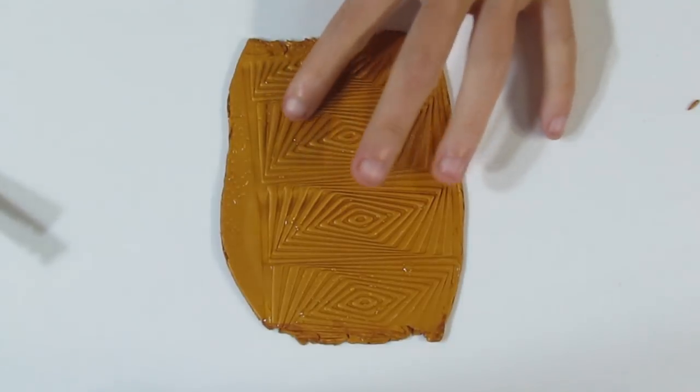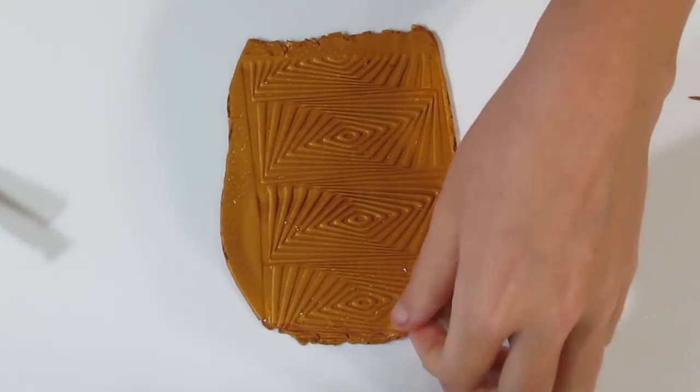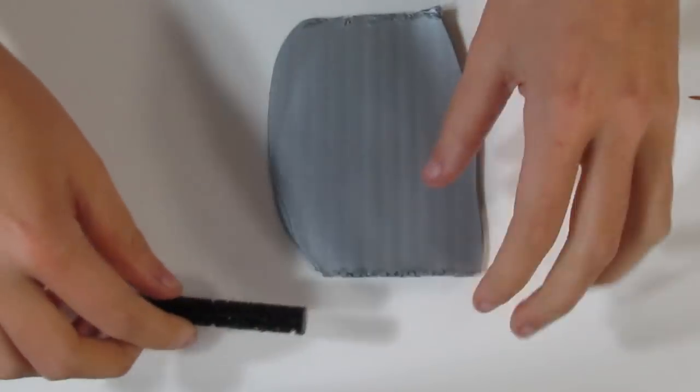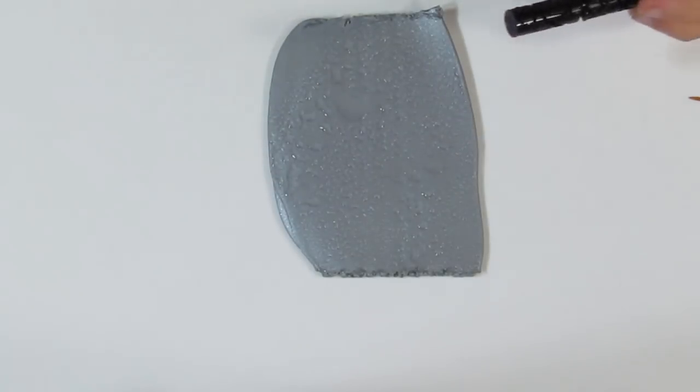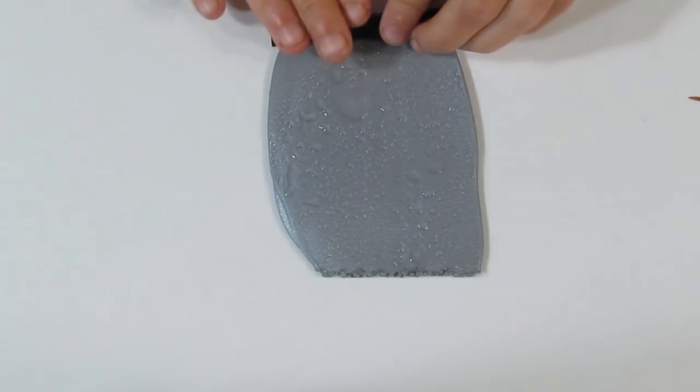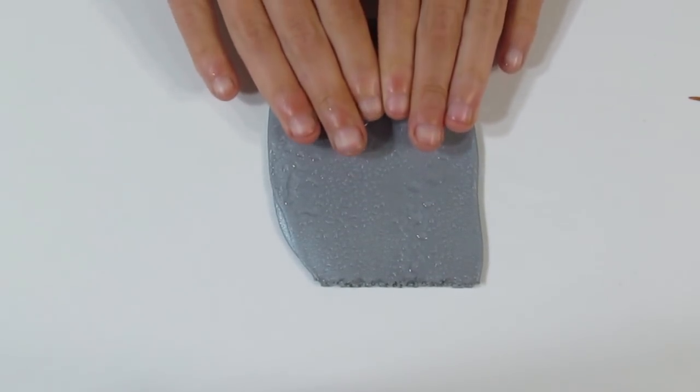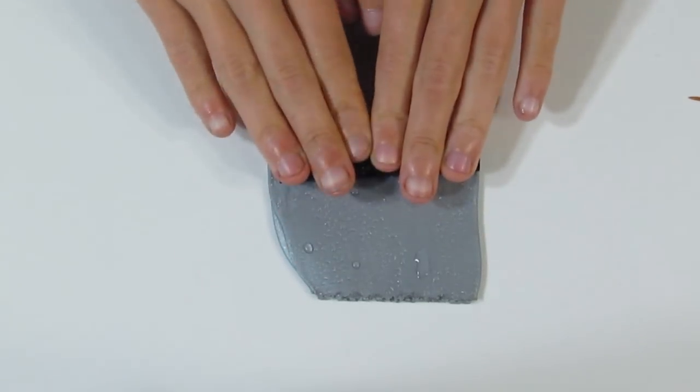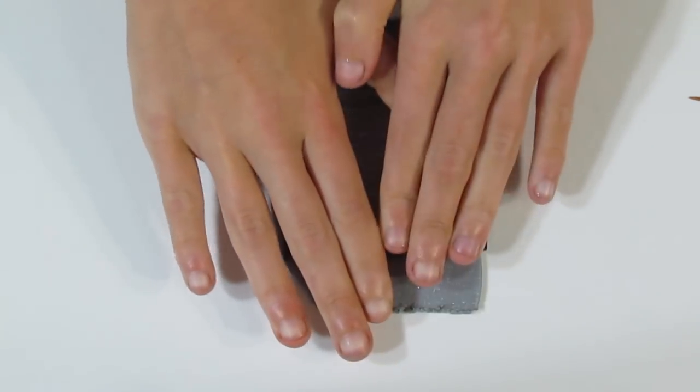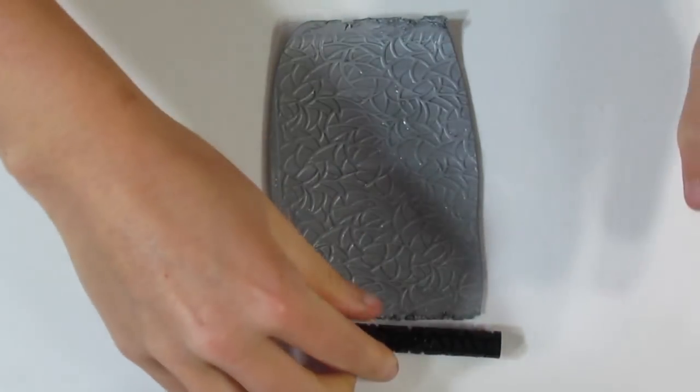There we are. I'm really happy with that, it's got some really nice textures. I'll pop that onto the side and do the same with a silver one using this Winter Frost. I thought it was appropriate to use a silver one for the Winter Frost. Now I'm going to roll.